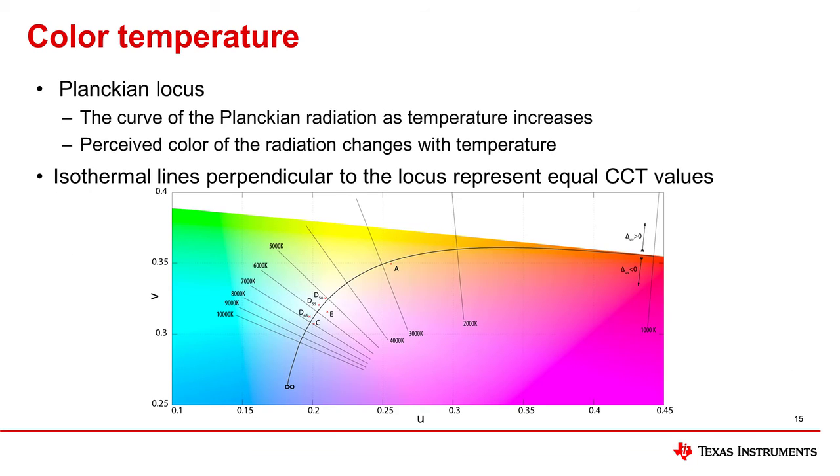The temperature dependence of Planckian radiation can be seen on the curve of the Planckian locus. The figure shown here is a projection of the CIE 1960 color space. The perpendicular lines are called isothermal lines and they represent the color temperatures that are equal to each point on the locus.